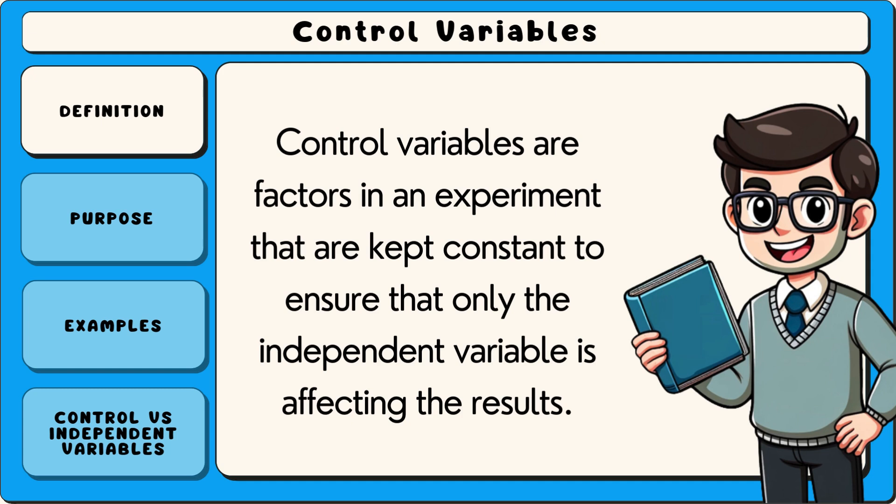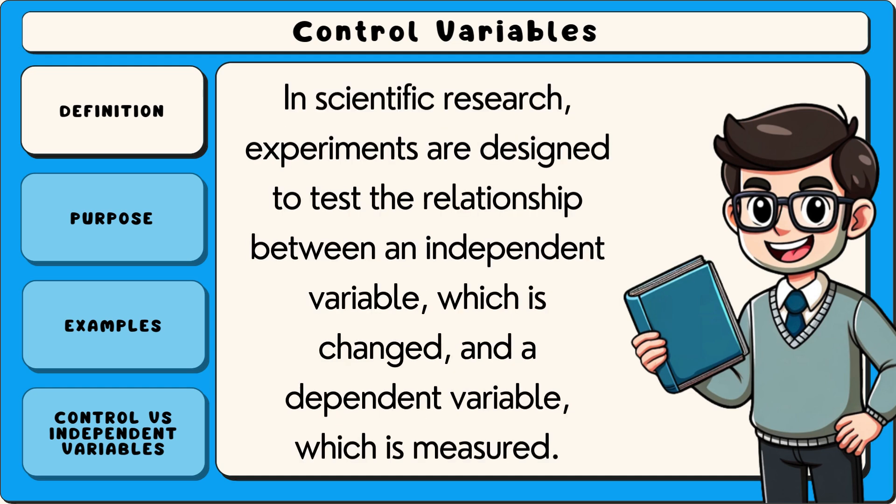Control variables are factors in an experiment that are kept constant to ensure that only the independent variable is affecting the results. In scientific research, experiments are designed to test the relationship between an independent variable, which is changed, and a dependent variable, which is measured.